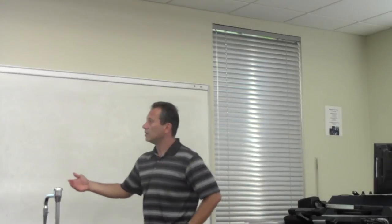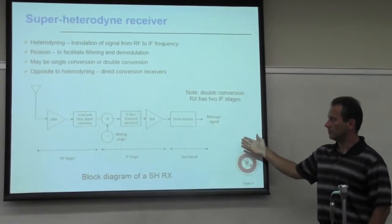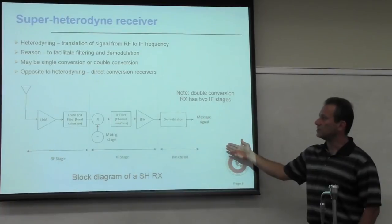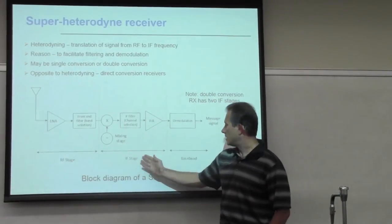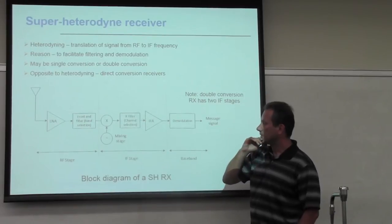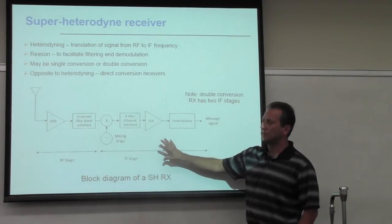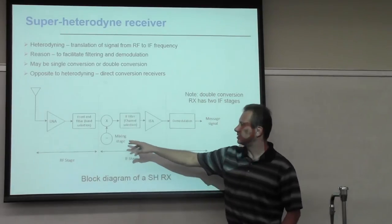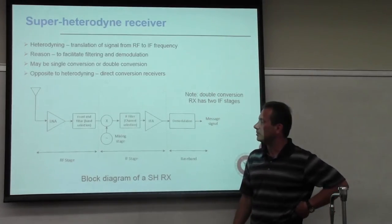The solution is to transmit and receive at the proper RF frequencies, but translate the signal down to a lower IF frequency where all the processing is done. Most of the time you have a single IF frequency — a single conversion receiver. If the operating frequency is relatively high, you may have double conversion, with two IF frequencies. Almost all RF receivers have these three stages: RF stage, IF stage, and baseband.